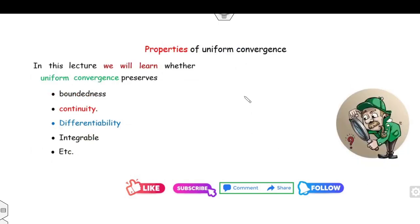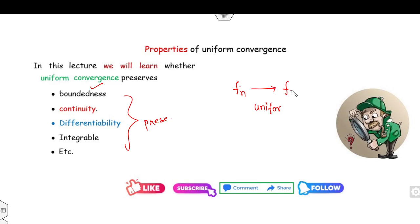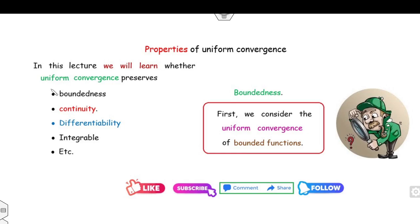If you prove that the sequence fn converges to f uniformly, then all these properties are preserved. That means if fn is bounded, f is also bounded; if fn is continuous, f is also continuous. In this lecture I will explain the boundedness case first — that is the objective of today's lecture.